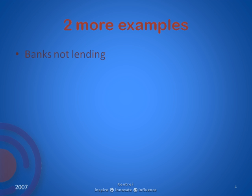The first example is that at the moment the banks aren't lending very much money, so there's no way that you will be able to get a mortgage from one. I've just turned a probability into a certainty. The second example is that you can't start a business in a recession — don't even try — because no startup business in a recession will make money, and they always all go bust.